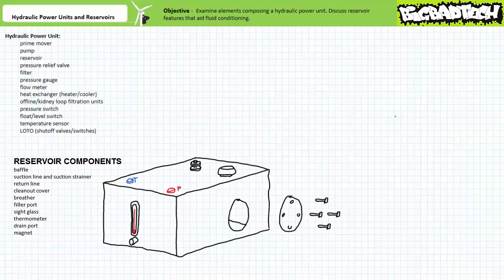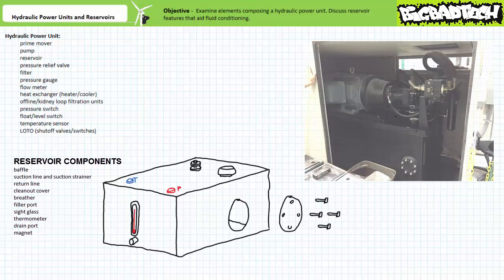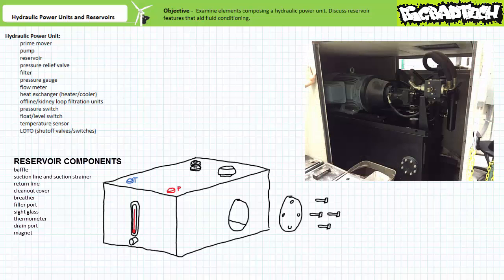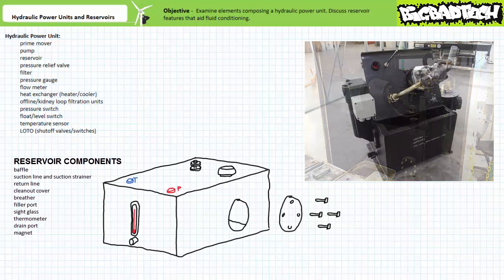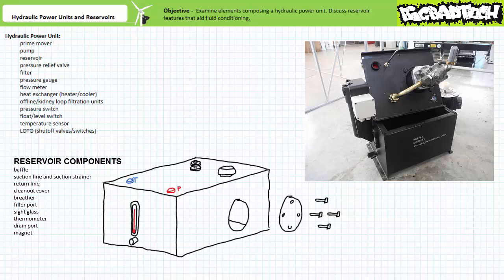Reservoirs commonly include other components like clean-out covers, breathers, filler ports, sight glasses, thermometers, drain ports and magnets. Reservoirs must be regularly cleaned and for this reason they may include a removable top or perhaps a removable clean-out cover on the side. Here's an example of a hydraulic power unit enclosed in a sound reduction enclosure with a clean-out cover on the side. This smaller reservoir's top comes off completely for cleaning or maintenance purposes.